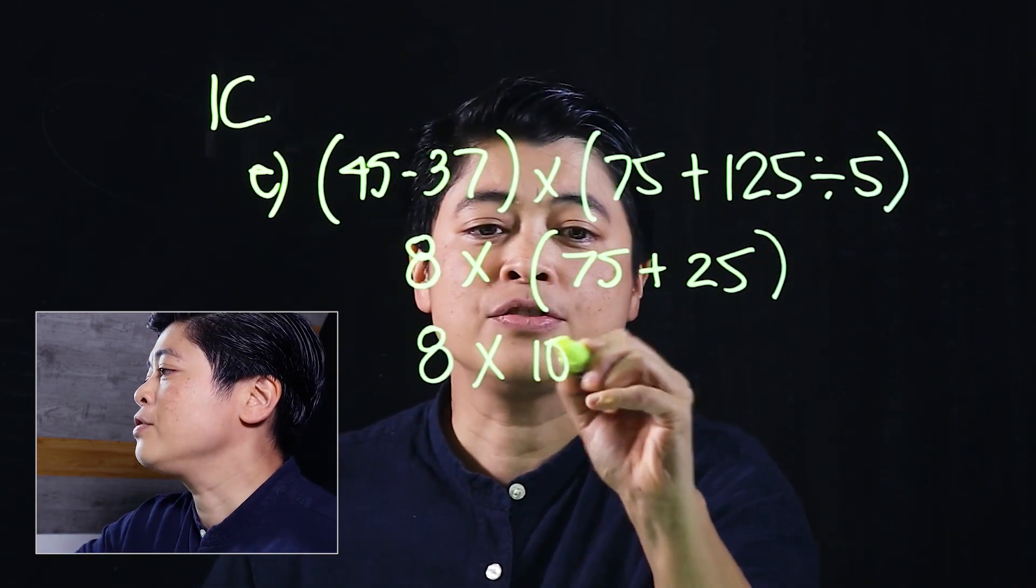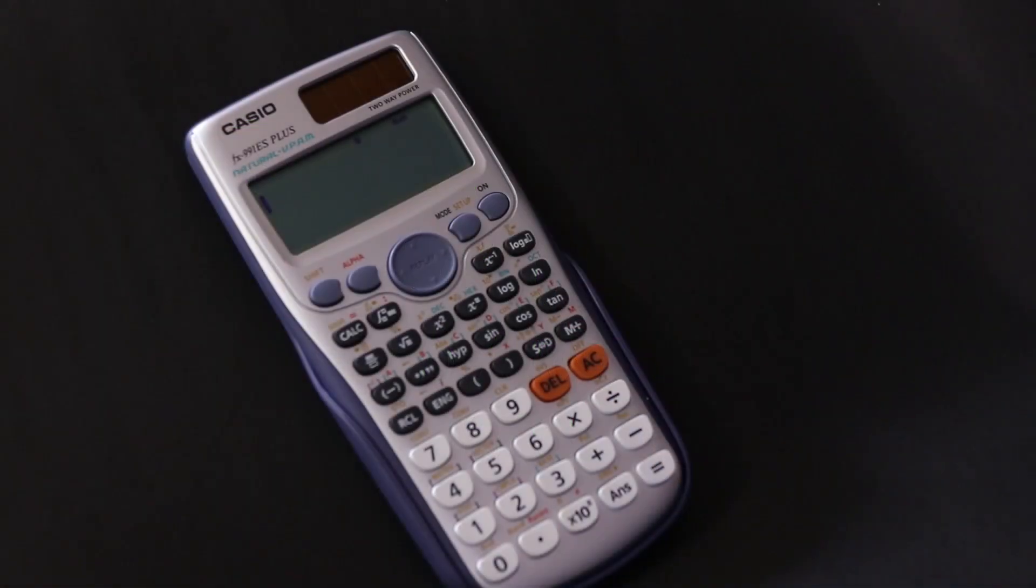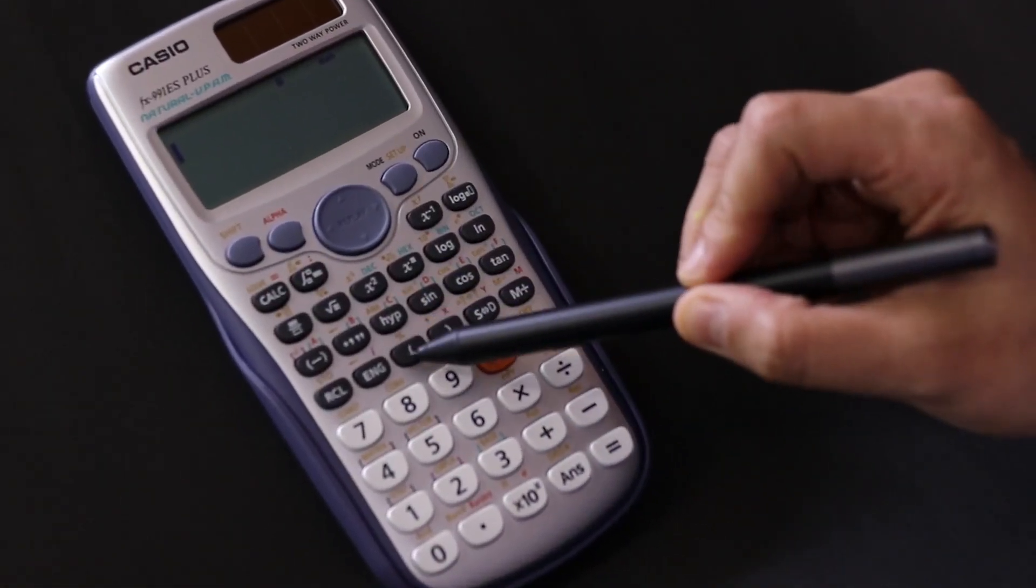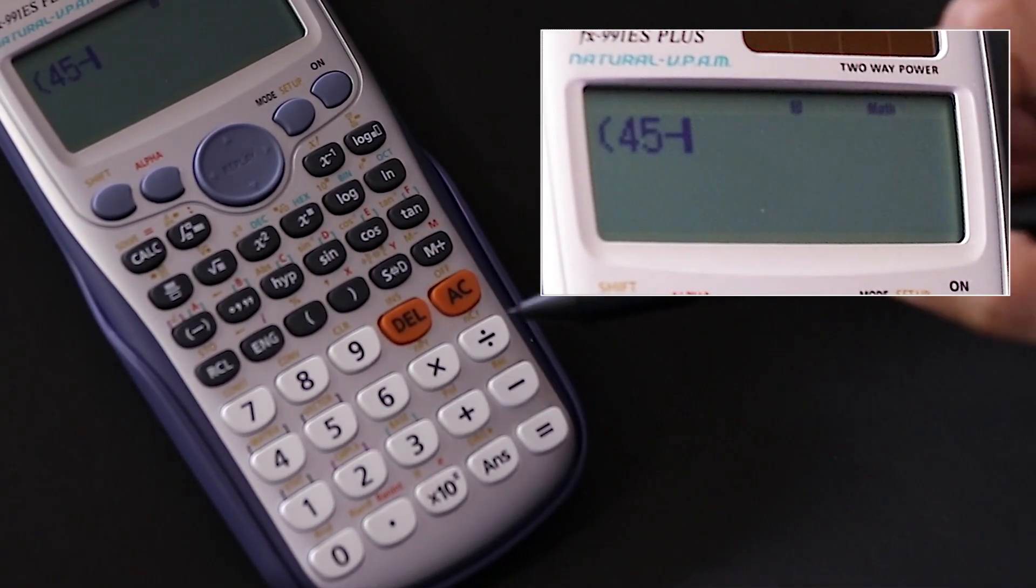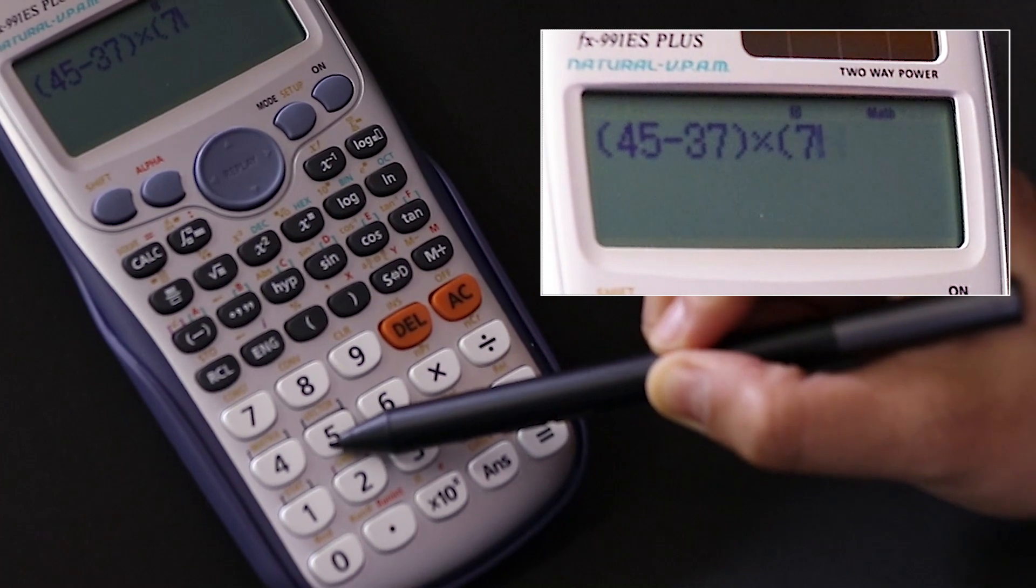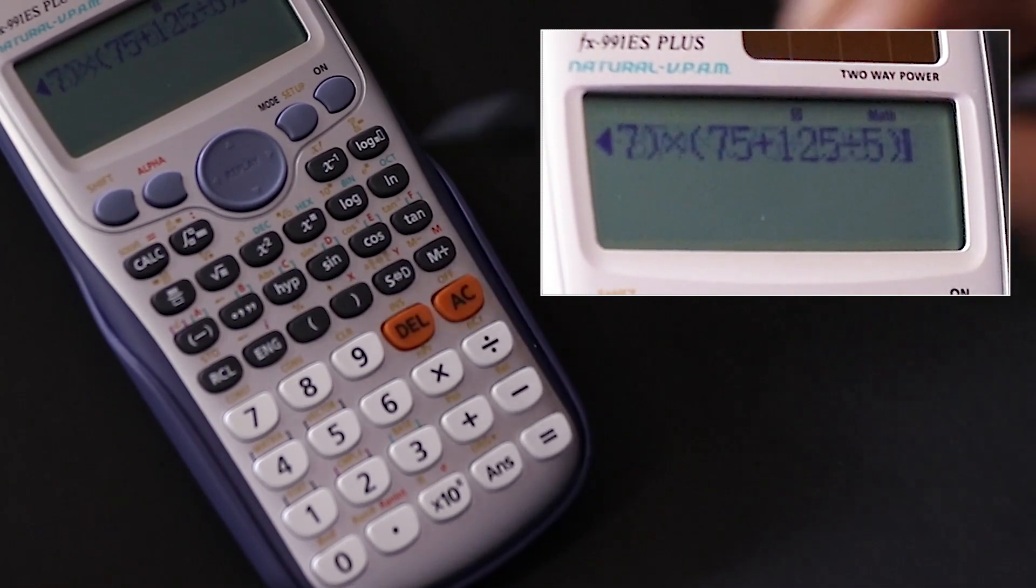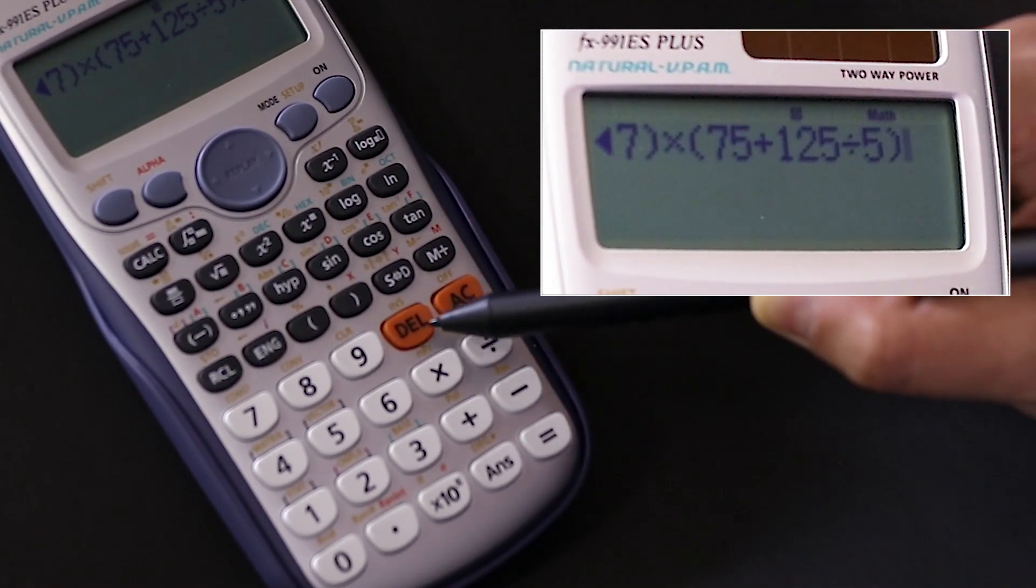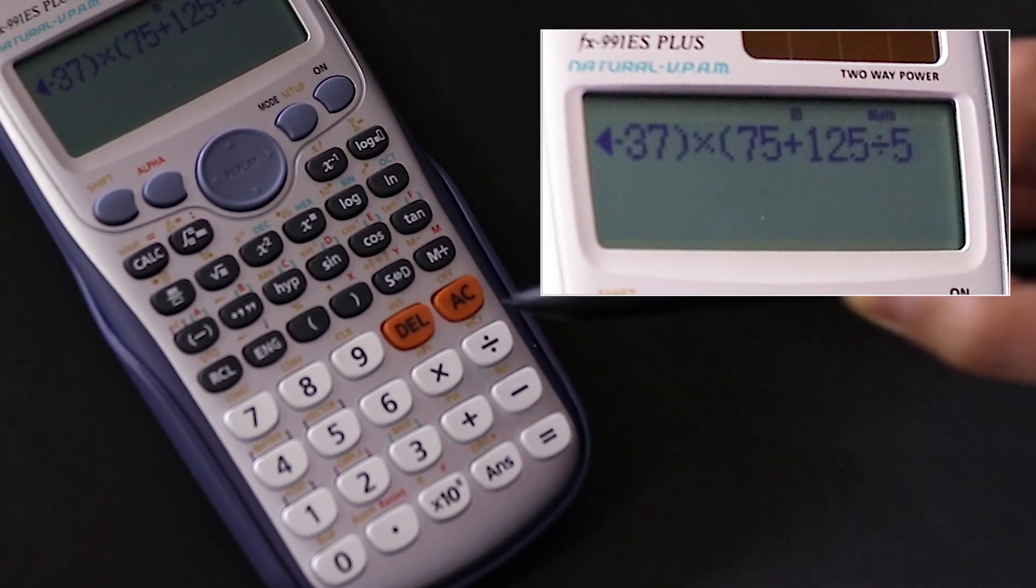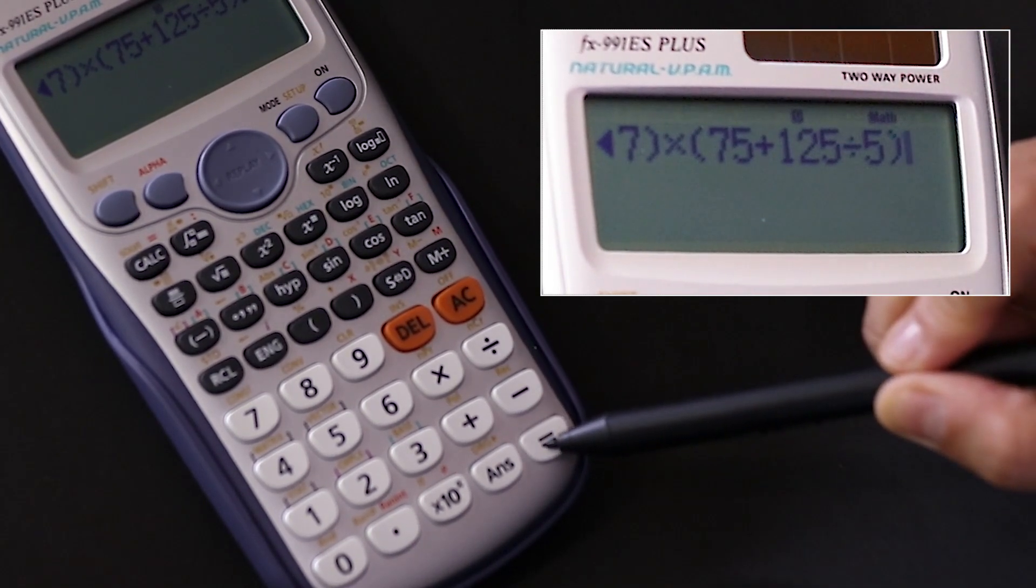When we type up in the calculator as well, checking our work with our calculator, we type up parentheses 45 minus 37, close parentheses, times parentheses 75 plus 125 divided by 5, close parentheses. Now if you make a mistake, there's a delete button. Let me do that delete, see it erase that last thing. I'll put it back so that you don't need to type up everything. If we press equal to, we should get 800 as we did earlier. That concludes lesson 3 of chapter 3. See you in the next lesson.